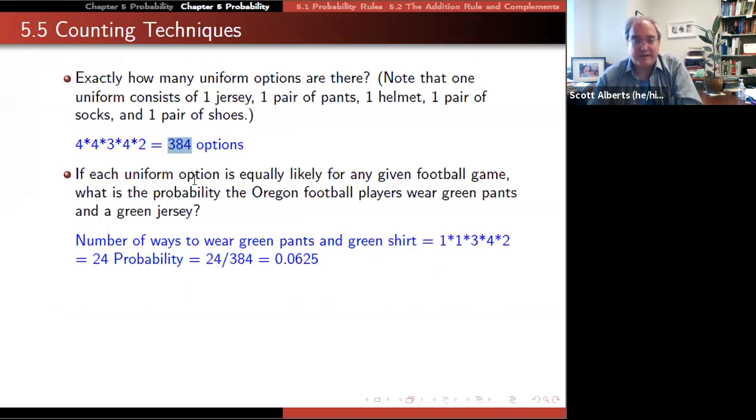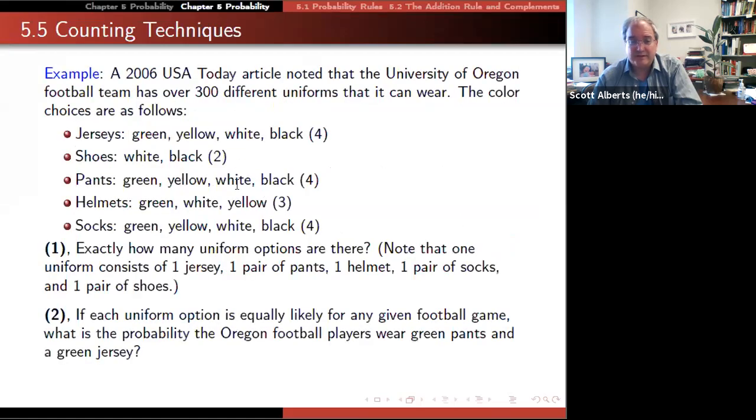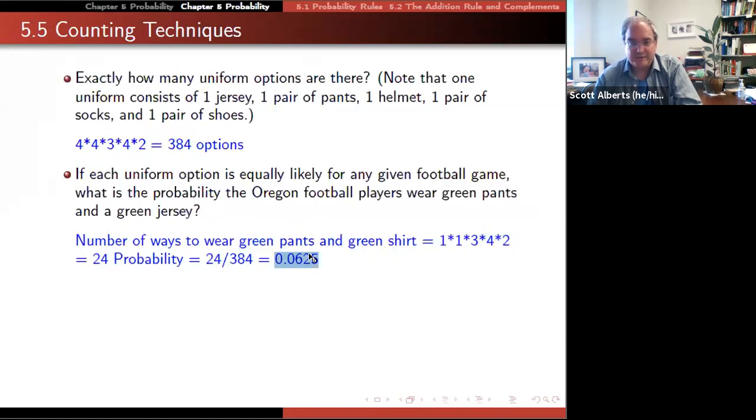Then if every option is equally likely, what's the probability that Oregon football players wear green pants and a green jersey? If we're just thinking about pants and a jersey, we could multiply all the different counts up because there's one way to pick pants and one way to pick a jersey and the other ones, which gives us 24 ways. Then we would take 24 out of 384, which gives us six and a quarter percent. We could actually do it more simply and just say one in four times one in four, which is one in 16, which is where that 6.25% comes from.